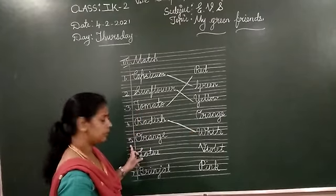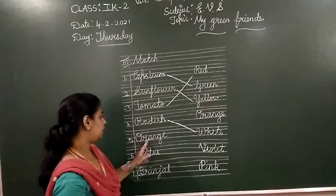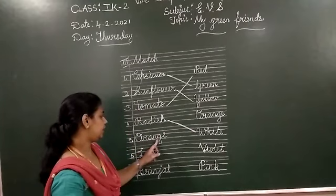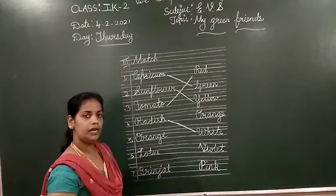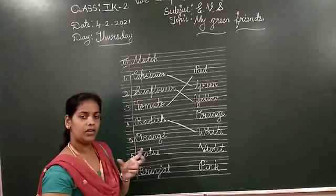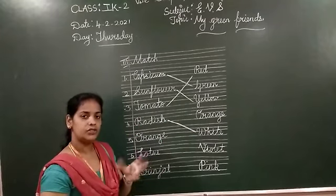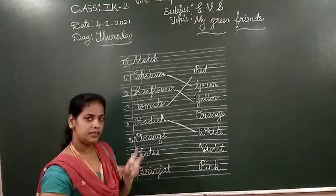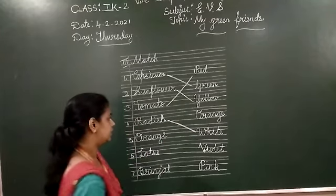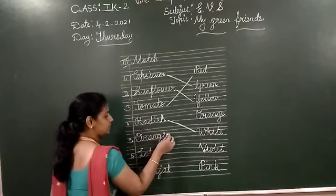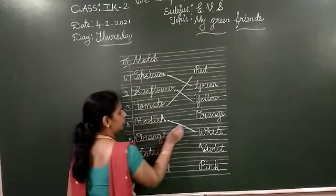Fifth one. O-R-A-N-G-E. Orange. Orange is a fruit. So orange is in which color? Orange color. So match orange to orange color.